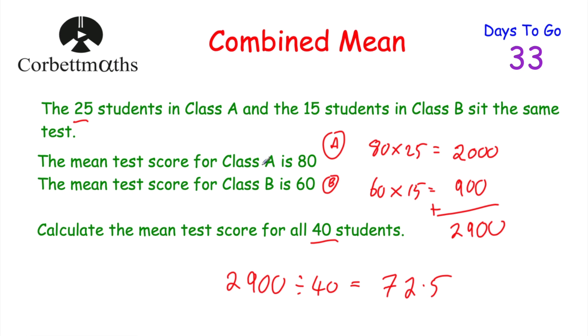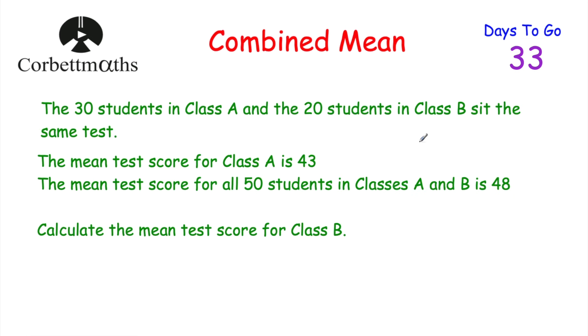As you can see, class A done particularly well — they're above the average for all 40 students. And class B found it a bit trickier. So the combined mean for those 40 students is 72.5.